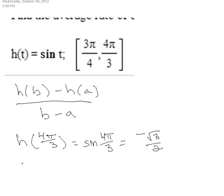And then H of 3π/4 is in the second quadrant, and so that's positive square root of 2 over 2.